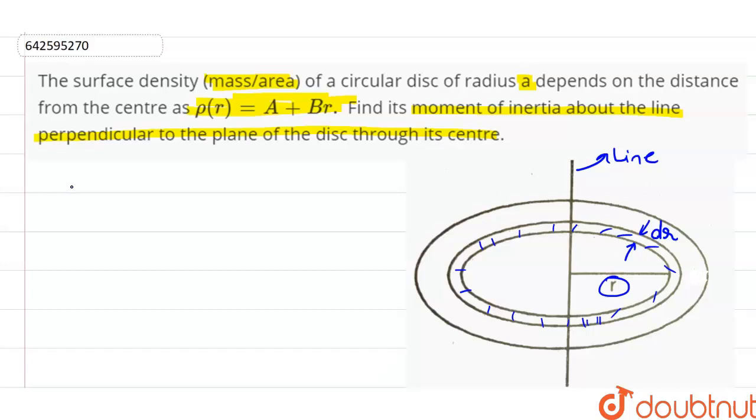So, the mass of this ring dm is equal to surface density ρ into the area 2πr dr.